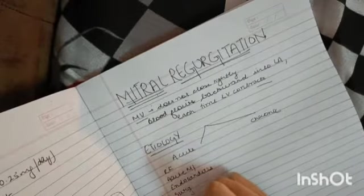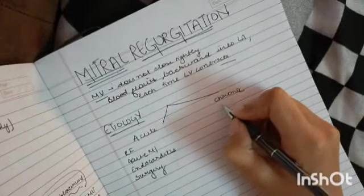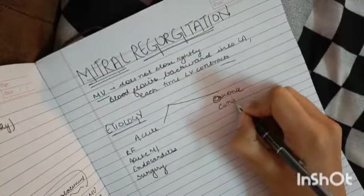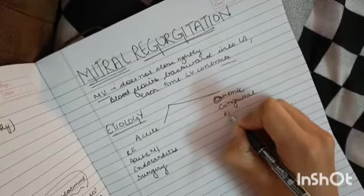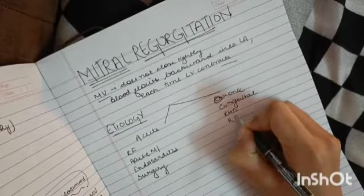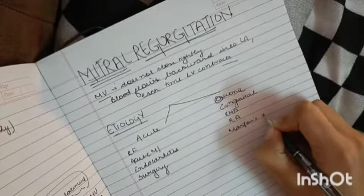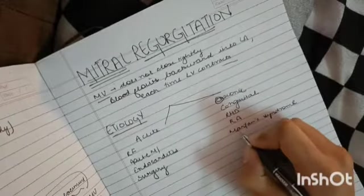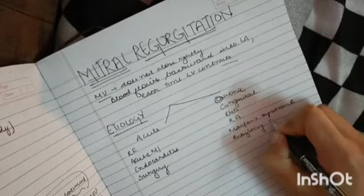For chronic, you will have to remember we have many factors. Coming to the first: C is congenital, then we can have rheumatic heart disease, rheumatic arthritis due to Marfan syndrome, or due to ankylosing spondylitis.